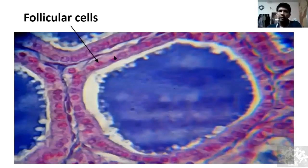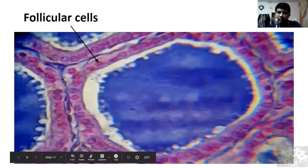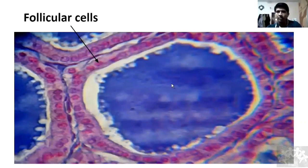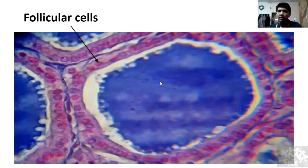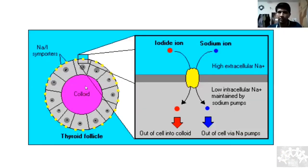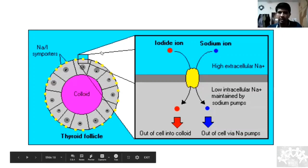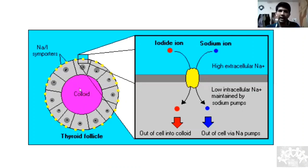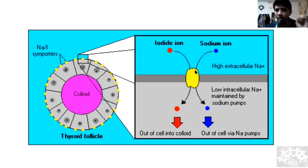Coming to histology: this is a follicle, the basic unit of the thyroid gland. The follicle is surrounded by follicular cells; inside is the colloid, which contains thyroglobulin and binds the thyroxine hormones. The follicular cells have a peculiarity — they have a sodium-iodide symporter, meaning they take up iodine through this channel. Any cell with a sodium-iodide symporter takes up iodine, which becomes important in radioisotope scanning.